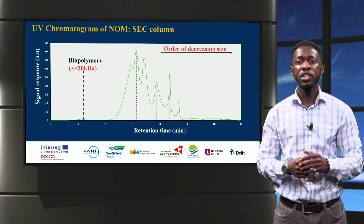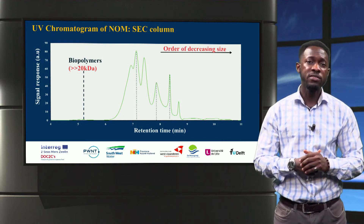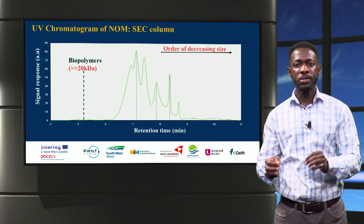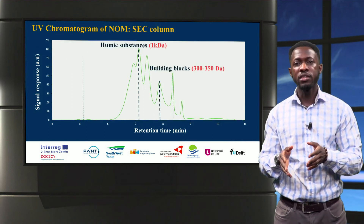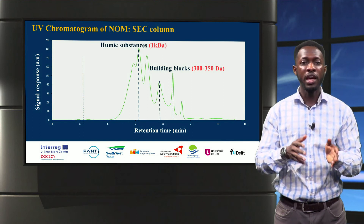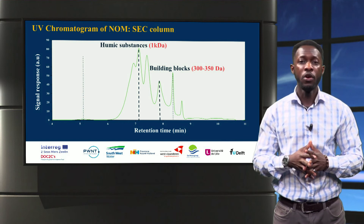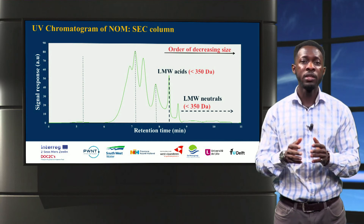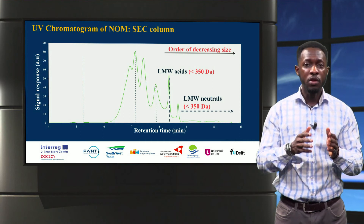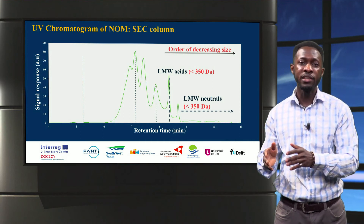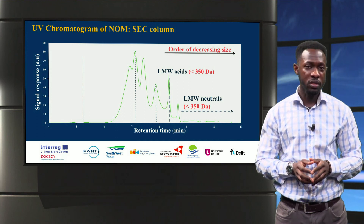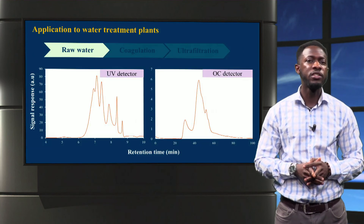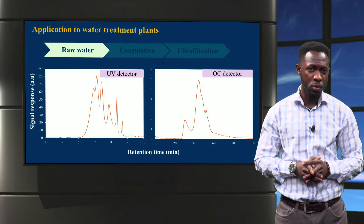Here, we see a chromatogram of a drinking water sample where the NOM has been characterized into five classes based on their sizes. The largest fraction, referred to as biopolymers, has sizes over 20,000 daltons. Humic substances and building blocks have sizes of about 1,000 daltons and 350 daltons respectively. The smallest fractions — lower molecular weight acids and lower molecular weight neutrals — have sizes below 350 daltons. This technique is very useful in assessing the efficiency of water treatment processes and methods.